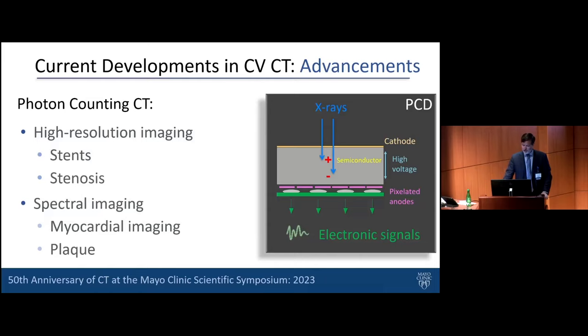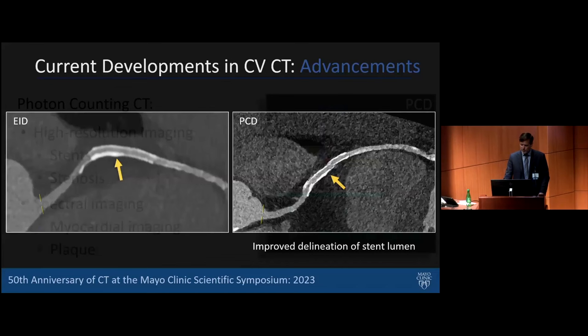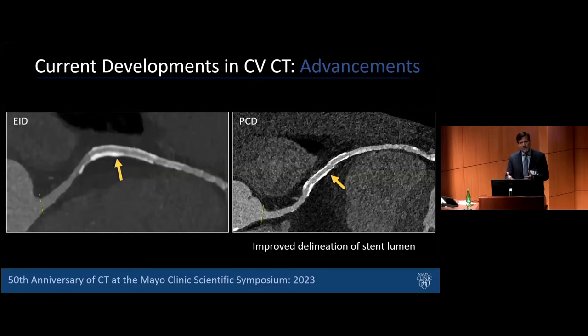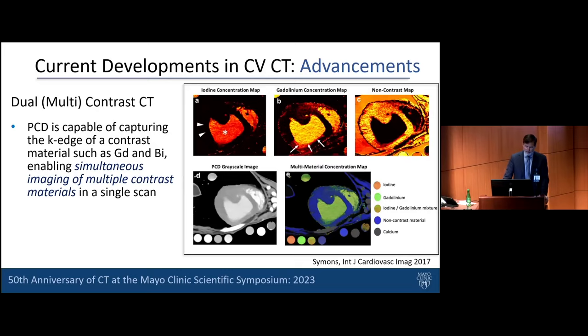I won't talk much about photon counting CT since those slides were already shown, but we are very excited in the cardiovascular space about the high-resolution imaging, stent and stenosis evaluation, and spectral imaging — specifically myocardial assessment. What we can do with photon counting when it's working is absolutely incredible: increased delineation of stent structures, evaluation of the myocardium, and potentially imaging multiple materials, as shown in a pig with inferior myocardial infarction with colleagues at the NIH.